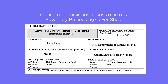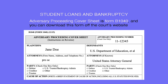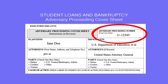The Adversary Proceeding Cover Sheet is Form B1-040, which you can download from the court's website. The line that says Adversary Proceeding Number — you might not have this number until you file your complaint.